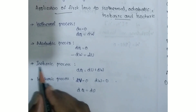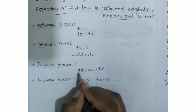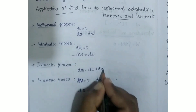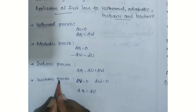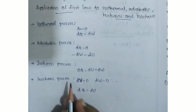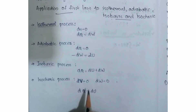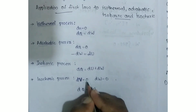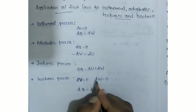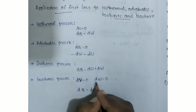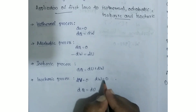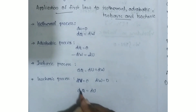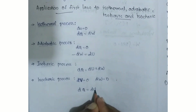The pressure is constant in the isobaric process, so dQ is equal to dU plus dW. In the isochoric process, the volume is constant, so work done W is equal to zero, and therefore dQ is equal to dU.